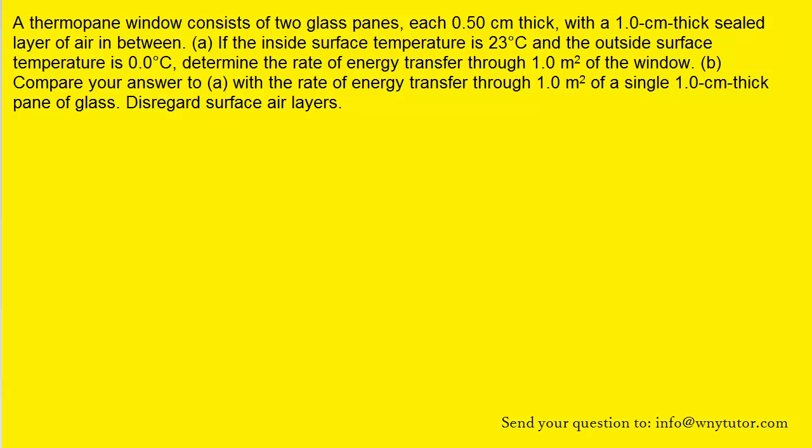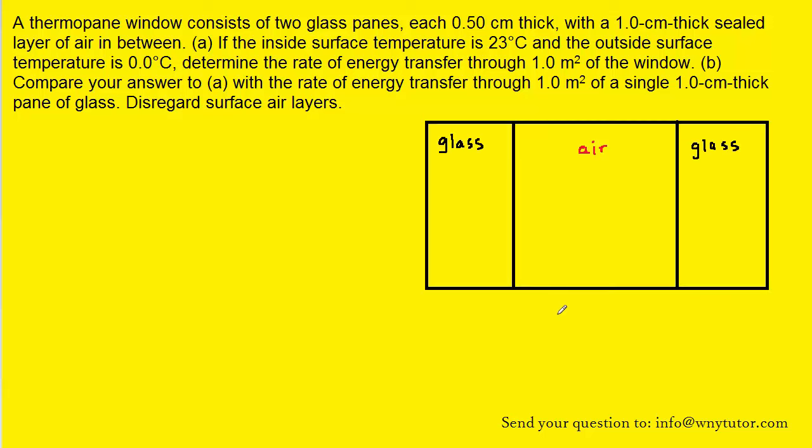For part A of the question, we're going to draw a window that has a layer of air trapped between it. This window would be known as a compound slab, as the textbook calls it, because you have layers of different materials. You've got your first layer of glass, followed by a different layer filled with air, and then another layer that goes back to glass.